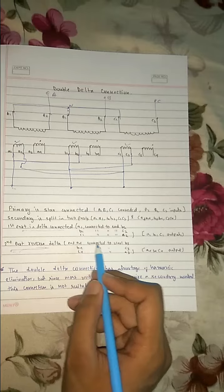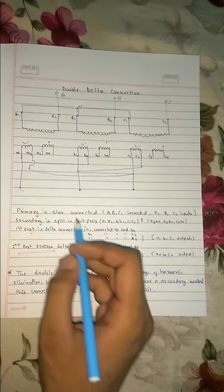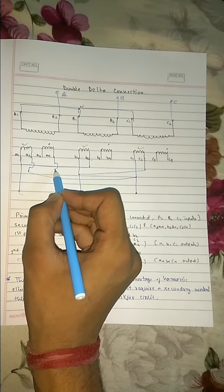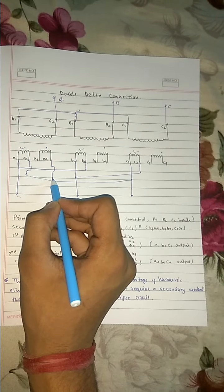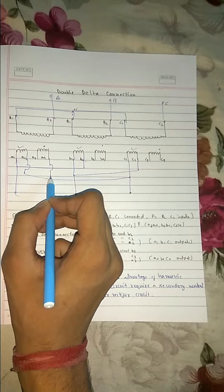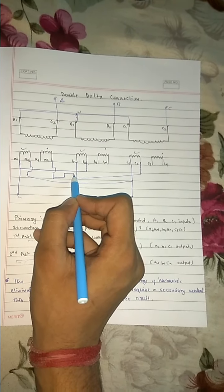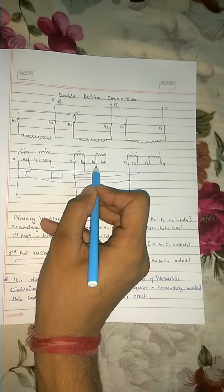This is our output, two terminals. Now for the second part, it is reverse delta. So end A4 is connected to start B3. So end A4 is connected to start of B3. Let's take it from here, B3.